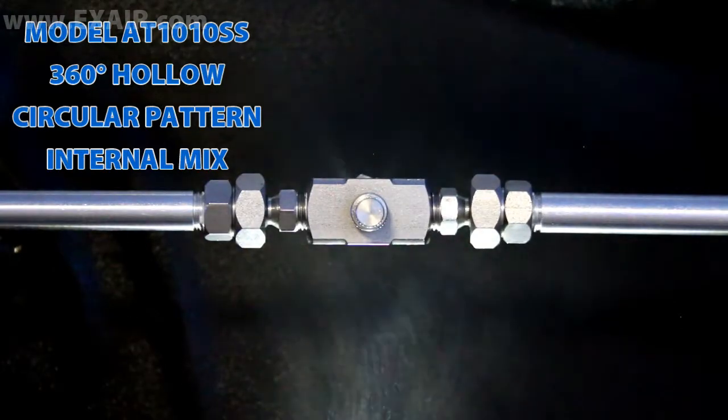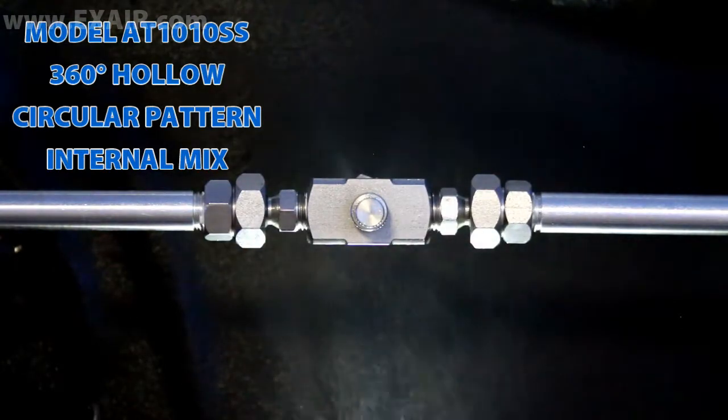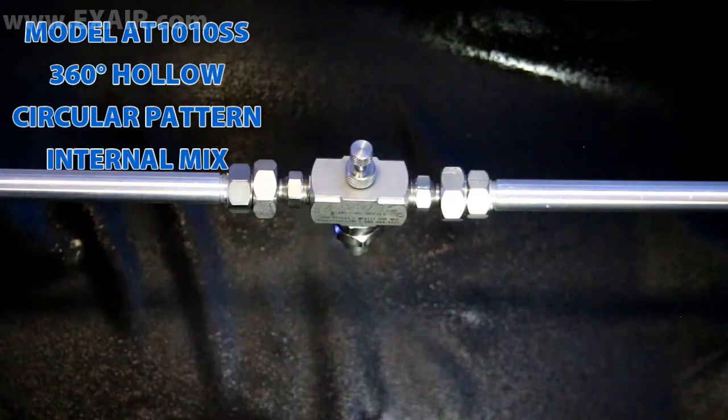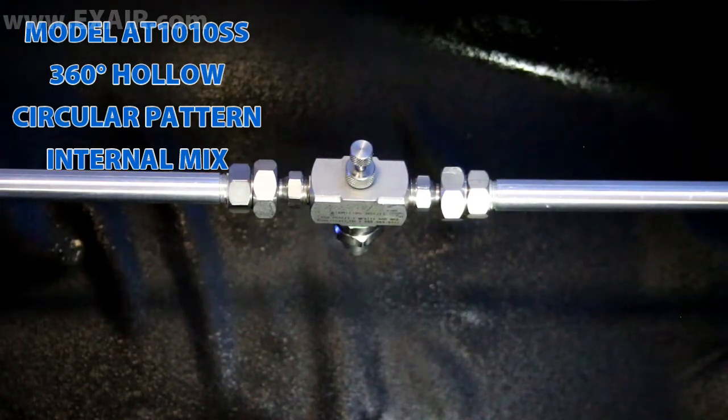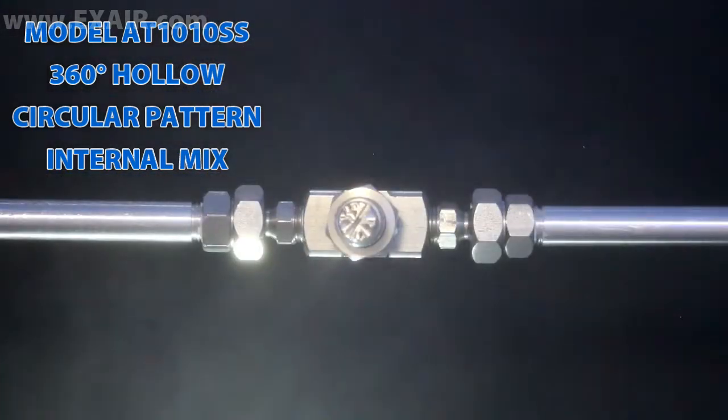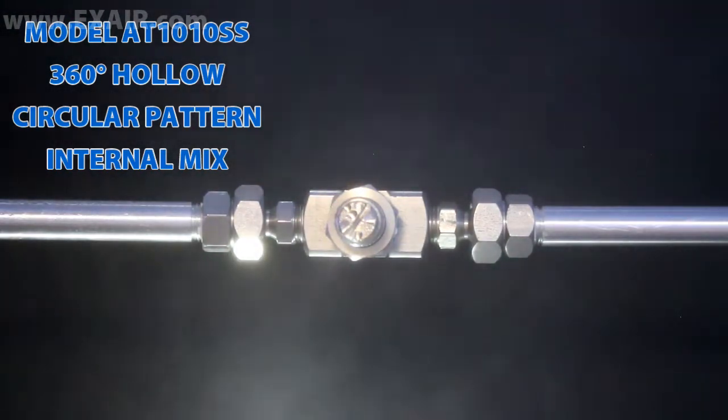360 degree hollow circular patterns create a liquid spray oriented away from the nozzle in all directions. They will cover a wide area with mist for dust suppression, humidification or cooling and can also be used for smooth even coatings inside pipes or duct work.